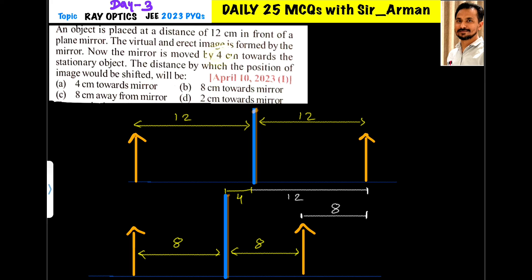Or in short, you always multiply the given shift by 2. So it is 2 times 4, which equals 8 cm.